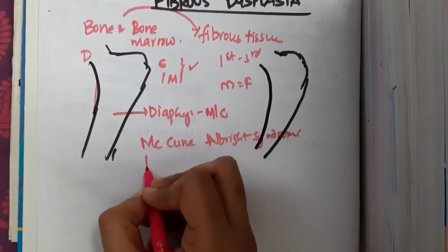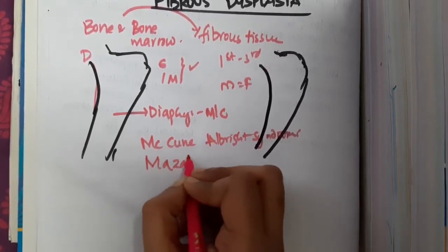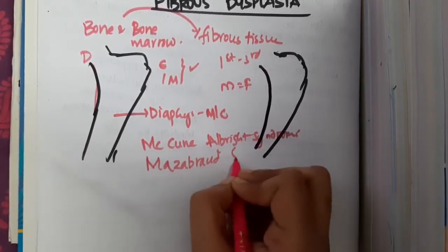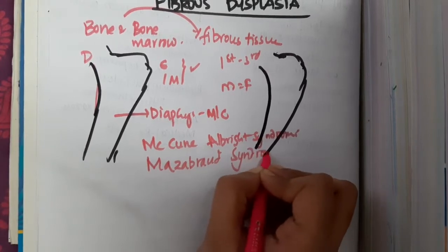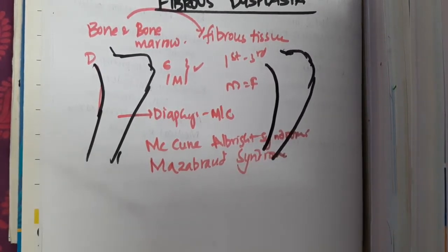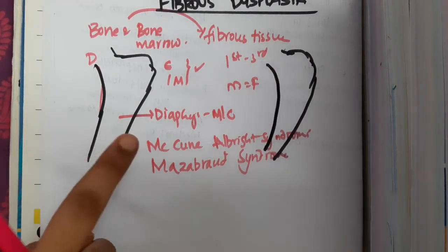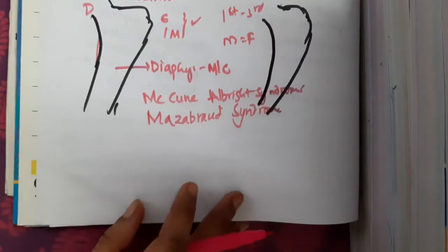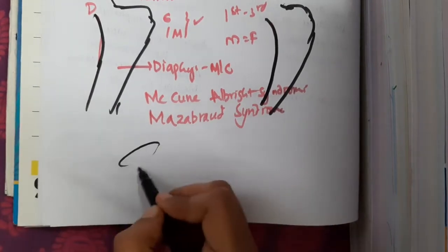The second associated syndrome is Mazabraud syndrome, in which fibrous dysplasia is associated with intramuscular myxomas.